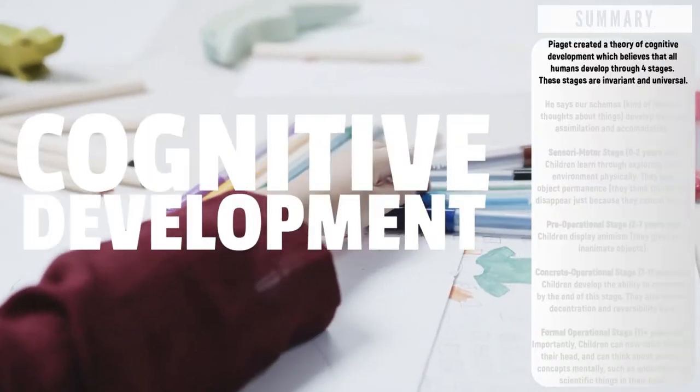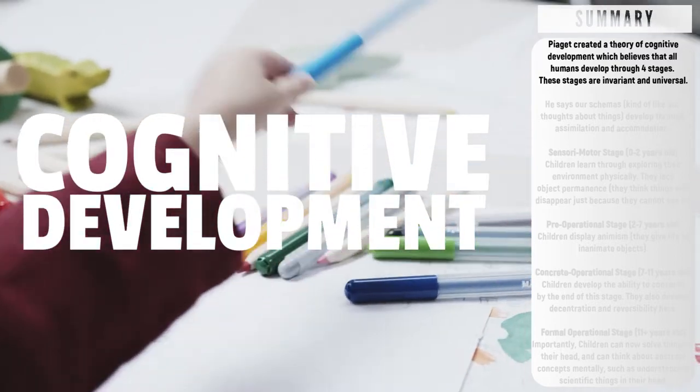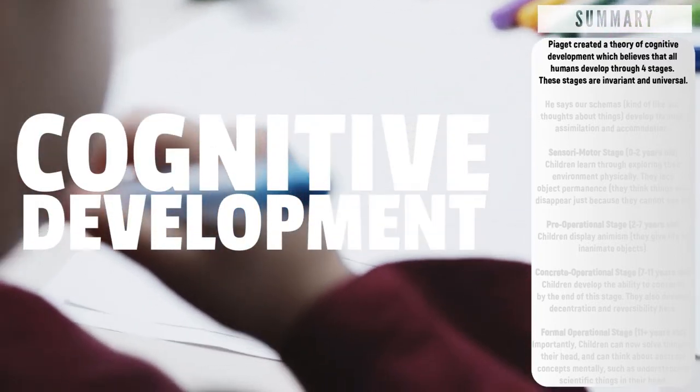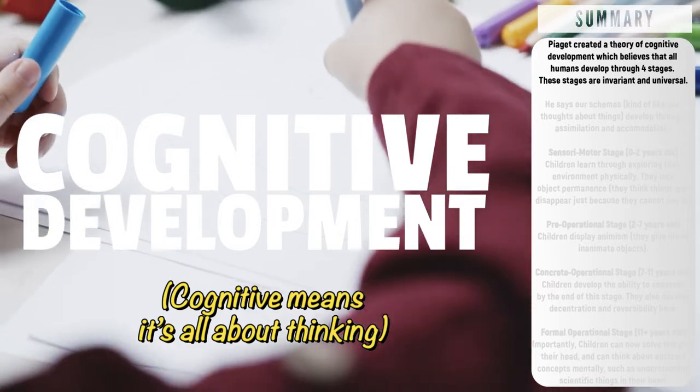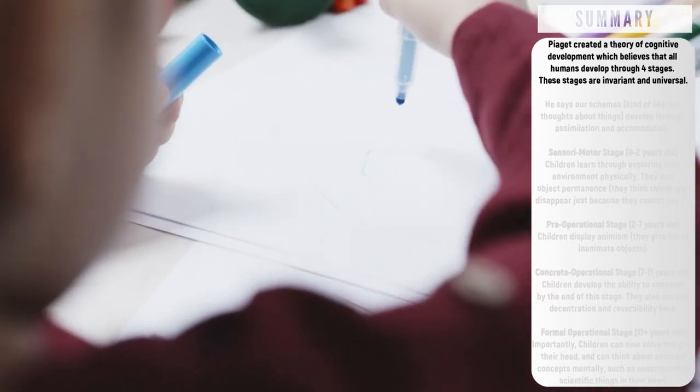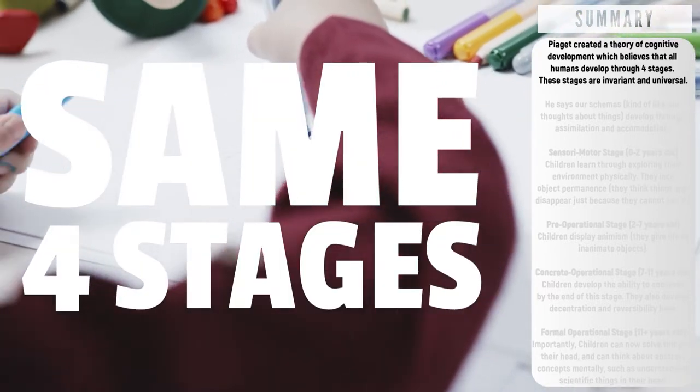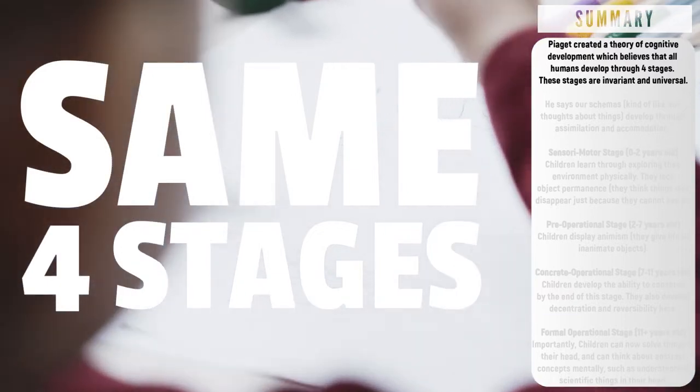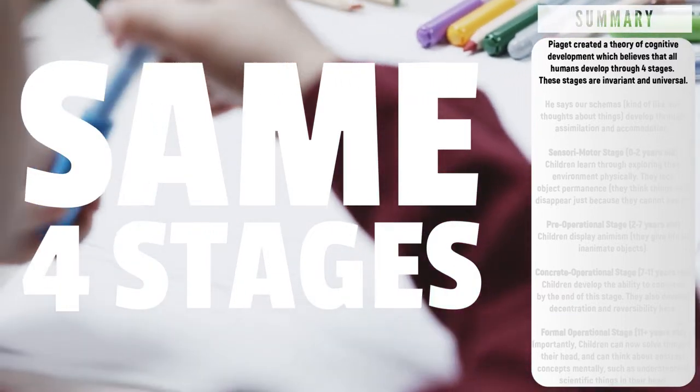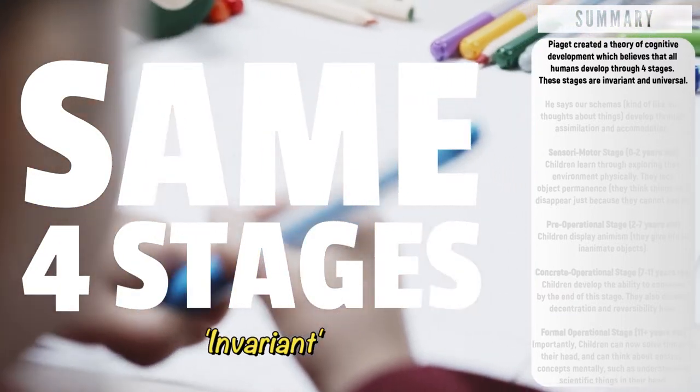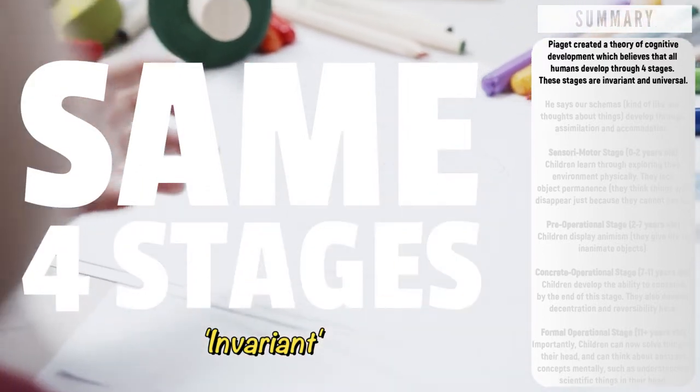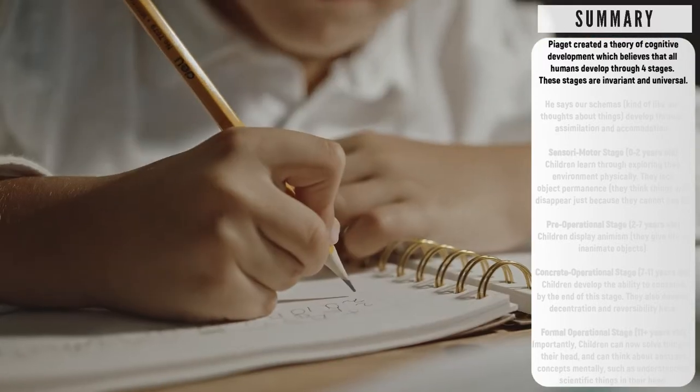Piaget created a theory of cognitive development. Cognitive development simply means the development of the mind and mental processes like thinking. He says that every single child in the world goes through the same four stages of cognitive development. That means they are invariant and fixed.